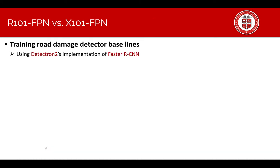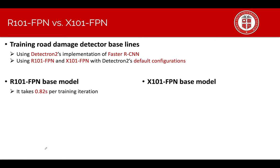We use Detectron 2 implementation of faster R-CNN. To start with we use Detectron 2's default configurations. Here are the results. It takes only 0.82 seconds per iteration and each iteration consists of 32 images.